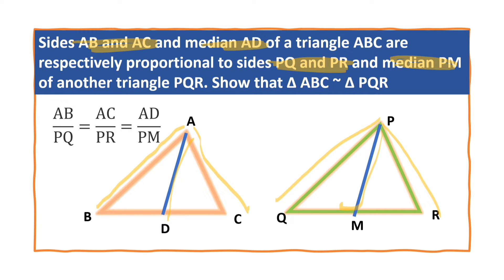We have to show that triangle ABC is similar to triangle PQR. We cannot prove the similarity by using the SSS criterion since AD is a median, not a side. We are given only two pairs of sides proportional to each other. In order to prove these two triangles are similar, we have to prove the included angles are equal — that means angle A should be equal to angle P.